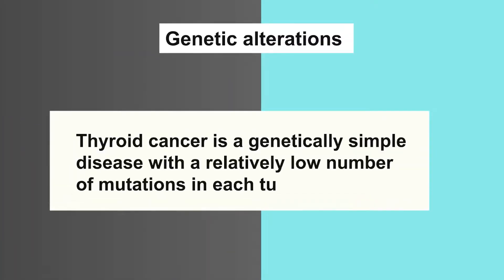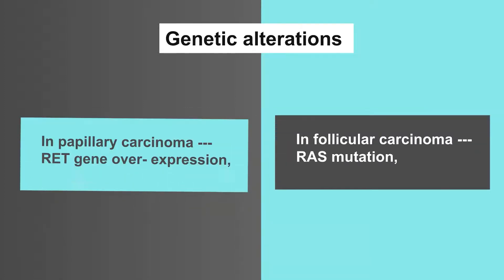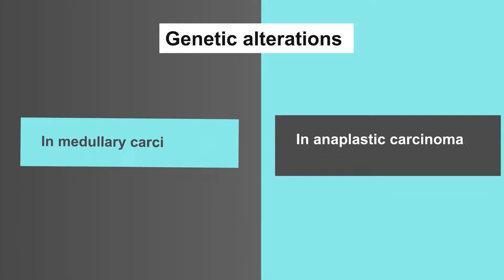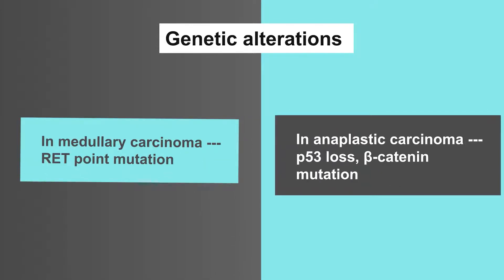Feature number five is genetic alterations, which means thyroid cancer is a genetically simple disease with a relatively low number of mutations in each tumor. In papillary carcinoma, RET gene overexpression and TRK gene rearrangement. In follicular carcinoma, RAS mutation and PAX8-PPARgamma1 fusion. In medullary carcinoma, RET point mutation. In anaplastic carcinoma, P53 loss and beta-catenin mutation.